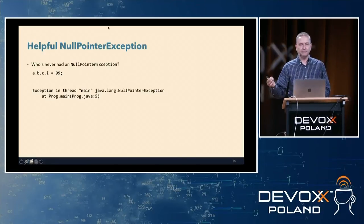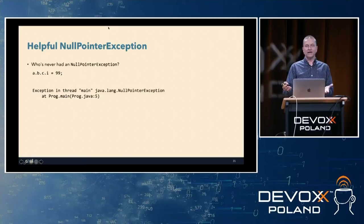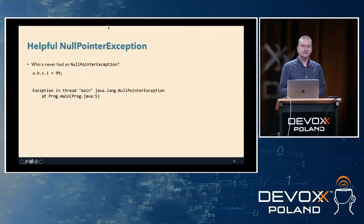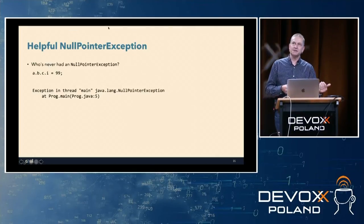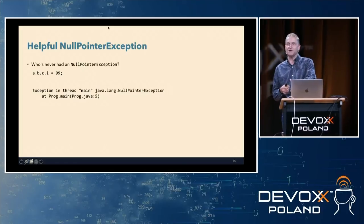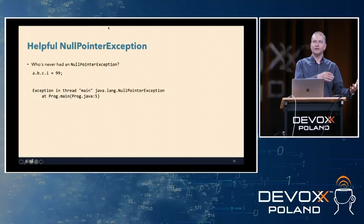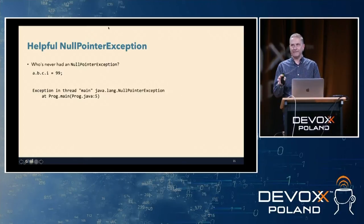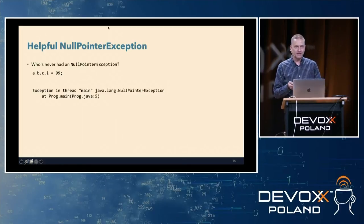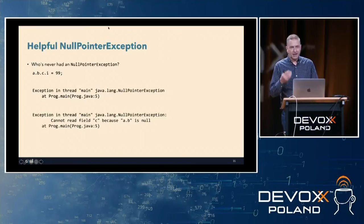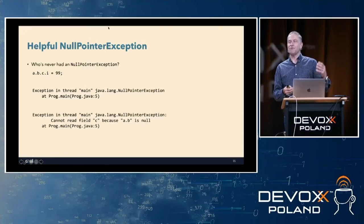So I know it's line 5 — that line of code. But the problem is: is it that a is null so I can't reference b? Is it b that's null so I can't reference c? Is it c that's null so I can't reference i? Then I have to fire up the debugger, put breakpoints in, look at things, or put print statements in. In JDK 14 we finally get: 'Cannot read field c because a.b is null.' Immediately I know where the problem is — I can go look at where I didn't set a.b.